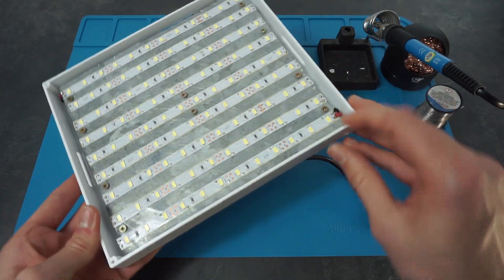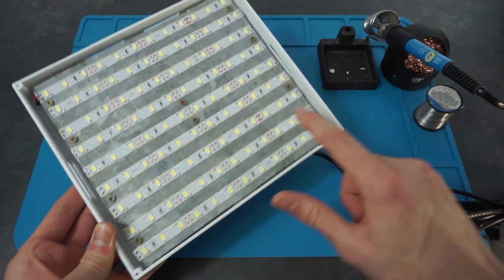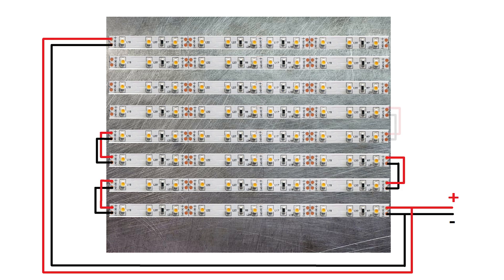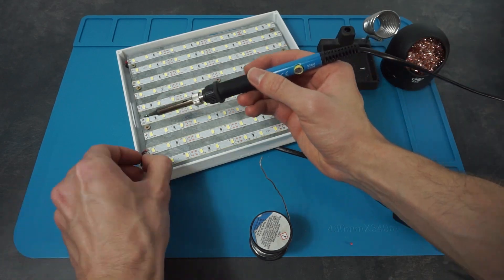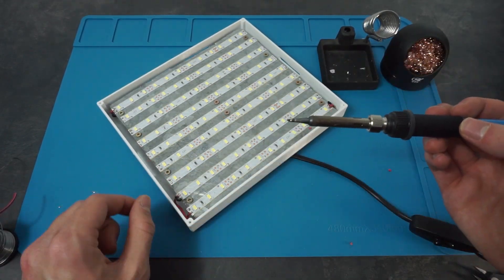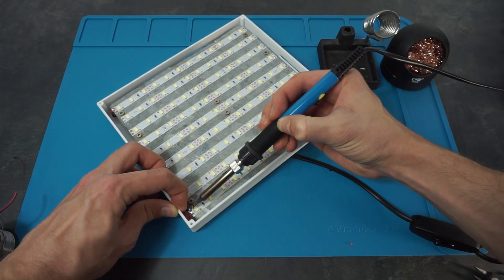Now to make all the strips glow, we just need to power them in series just like on this diagram. But soldering all those wires turned out to be quite a time-consuming task. So let's just jump to the moment when future me got it all working.